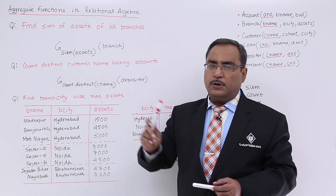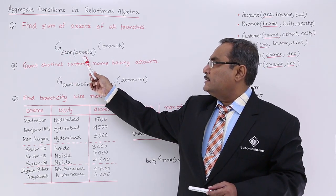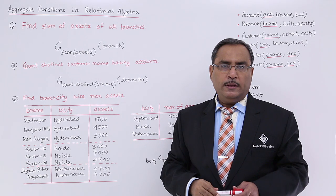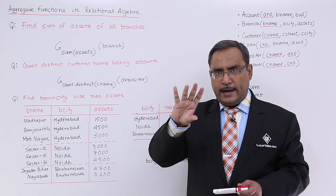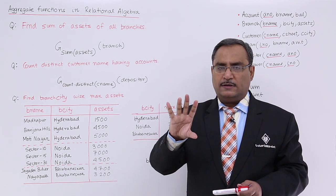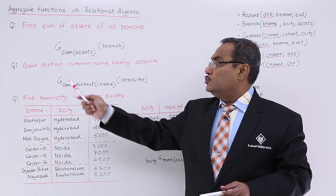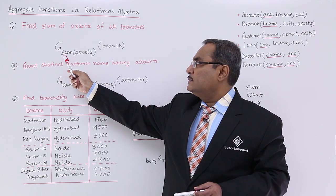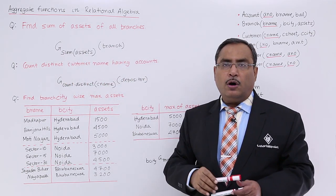Here, G stands for group by. So, sum of assets operated on branch — all the asset values will get added and the sum of those asset values will come as output. This is the group by operator: group by, sum of assets, operated on branch.